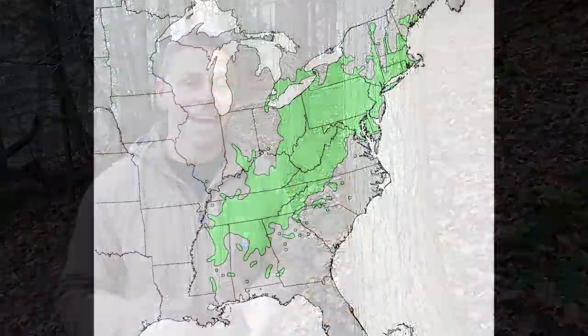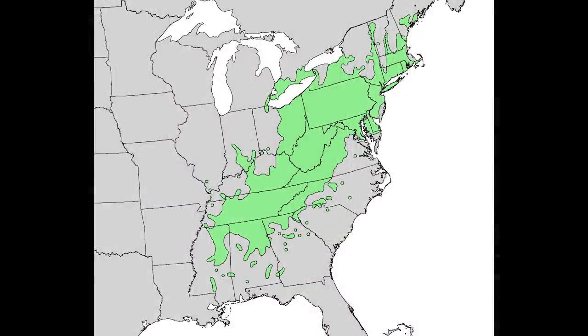I live in the great state of Pennsylvania, which I think most people would agree is part of the eastern forest biome. When we look at the natural distribution of American chestnut, we see that the entire state of Pennsylvania is represented. But was American chestnut the most abundant tree throughout the entire state of Pennsylvania?